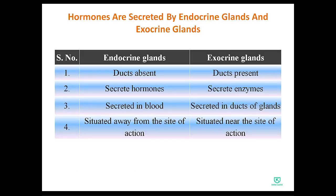Endocrine glands and exocrine glands are two types of glands. In simple language, glands are where some secretion is produced. For example, the salivary gland is a gland that secretes substances involved in digestion. There are two types of glands: endocrine glands and exocrine glands, as shown in this table.